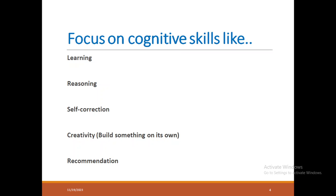When you build an effective AI system, what are the primary expectations from these systems? The first one is learning on their own, on the basis of machine learning algorithms such as supervised, unsupervised, semi-supervised, and reinforcement learning algorithms. The second thing is reasoning, third is self-correction, and fourth is creativity.